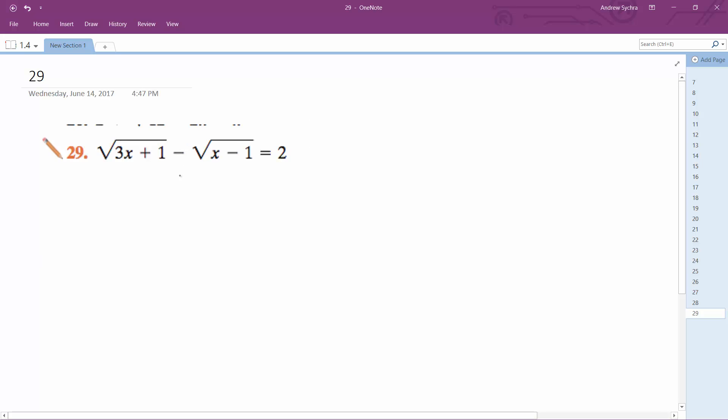All right, let's do this problem. So I'm going to move this over to the right side. I get square root of 3x plus 1 is equal to 2 plus square root of x minus 1.